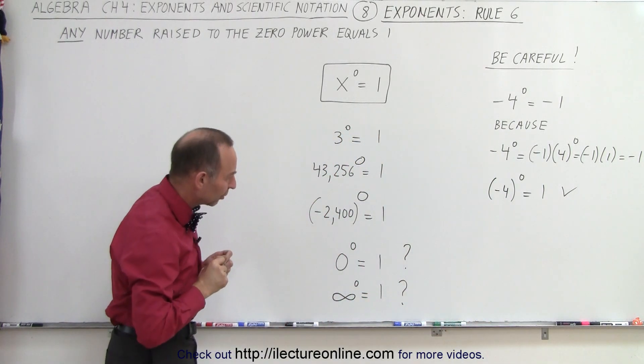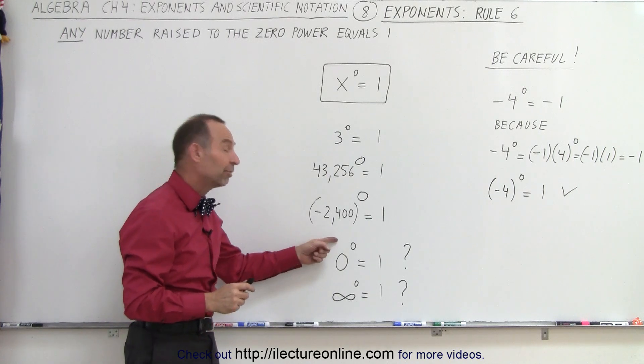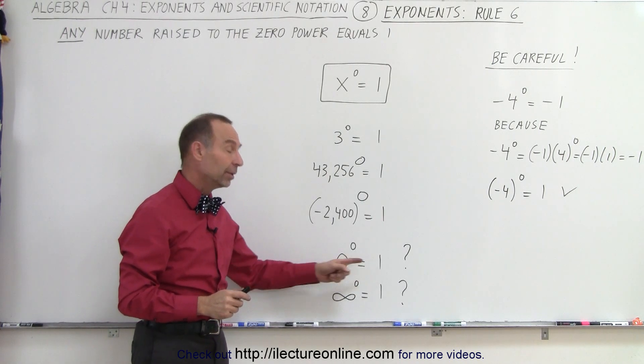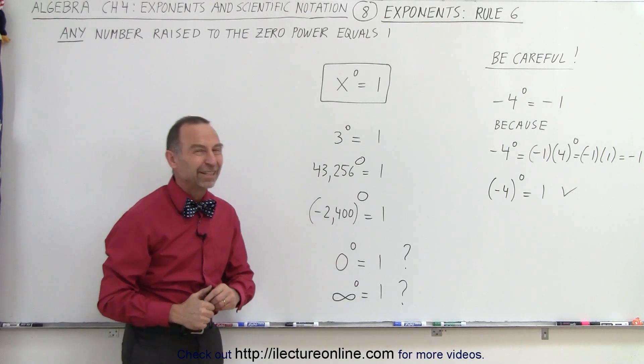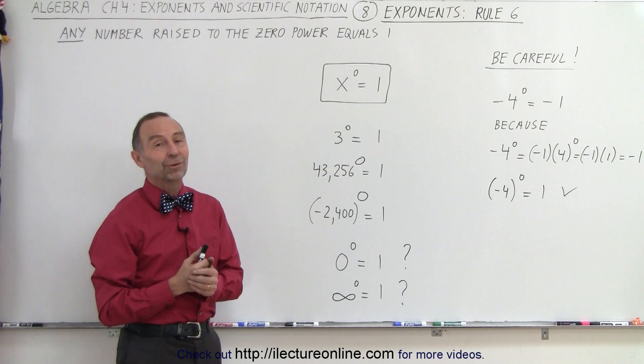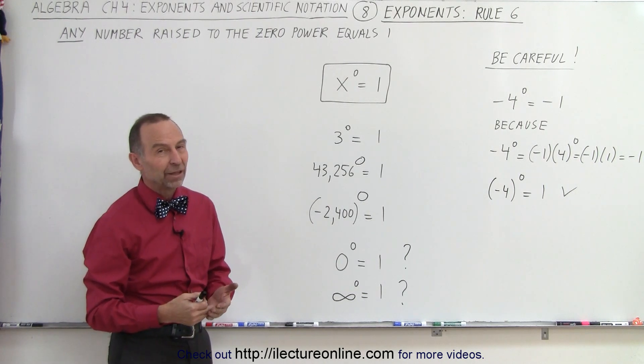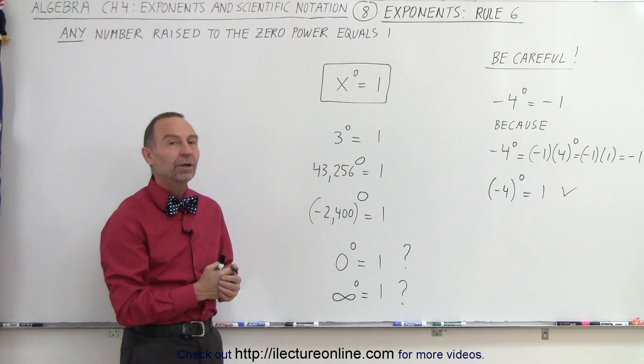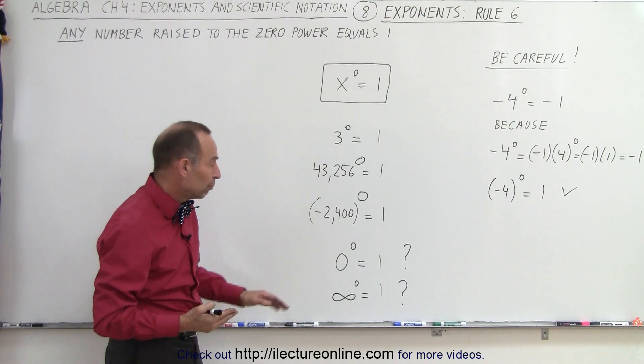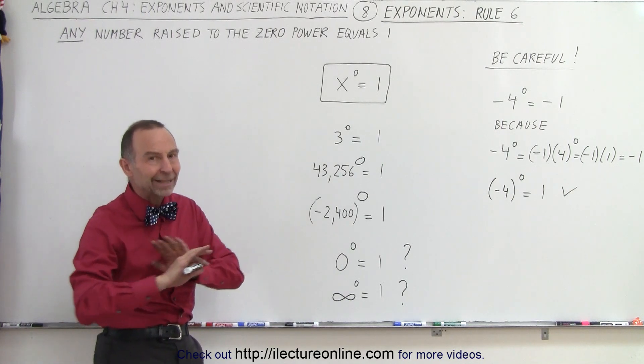But then there's always the question, you said any number. What about 0 raised to the 0 power? Is that equal to 1? How about infinity raised to the 0 power? Is that equal to 1? And it turns out there's not absolute agreement to it. Some people will say yes, and some people will say no. So we're going to have some fun later on. We're going to try to find that a little bit more. At this point in general, most people would agree that 0 to the 0 power equals 1, simply by definition.